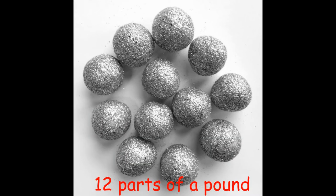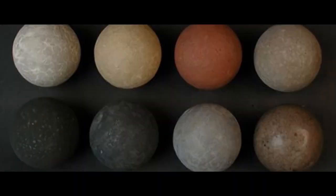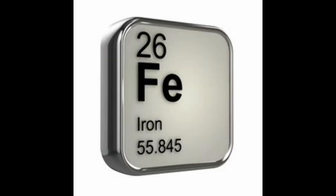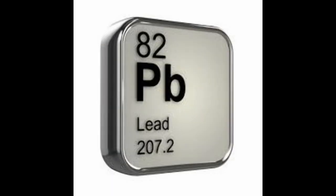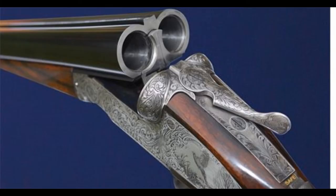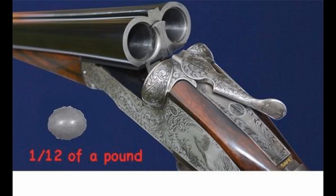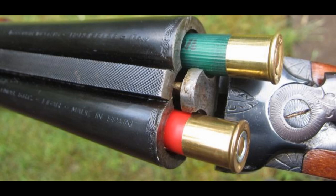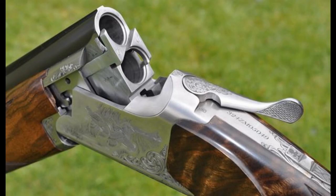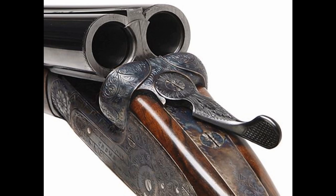So a 12-bore shotgun is capable of firing 1/12th of a pound. But different materials have different densities, and even iron may have different densities in its various forms. For this reason, lead is chosen as the universal material. So if we talk about a 12-bore shotgun, it means a sphere of lead weighing 1 pound is equally divided into 12 equal parts, and this one part — one small sphere — has a diameter equal to the internal diameter of a 12-bore shotgun. Similarly, we have 32-bore, 12-bore, 20-bore, 16-bore, and different bores available all around the world.